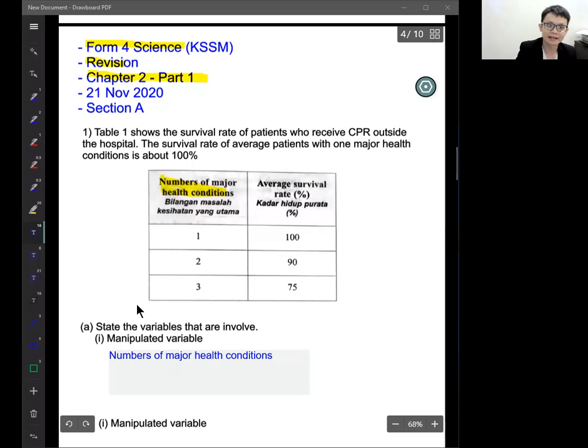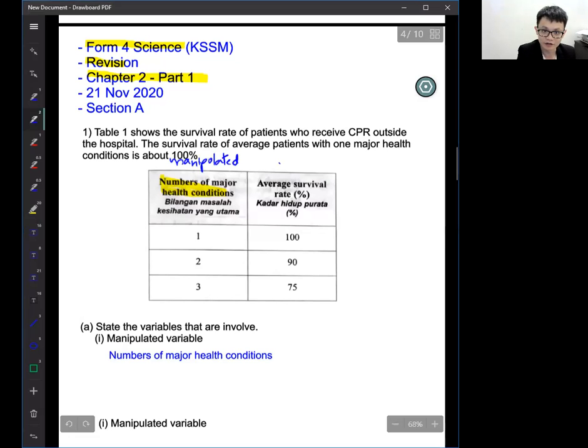If there is a table, like a table, usually on the left side is the manipulated, usually, manipulated, almost actually 99%, and on the another side will be the responding. If you forget, you just remember like this. The left side will be the manipulated, the right side will be the responding.